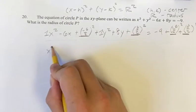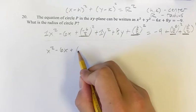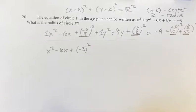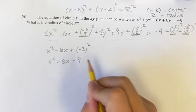So you have 1x squared is x squared, minus 6x, plus negative 6 divided by 2. It's going to be negative 3 squared. This is going to be x squared, minus 6x, plus negative 3 squared is positive 9.